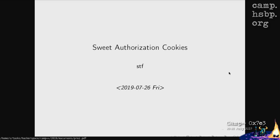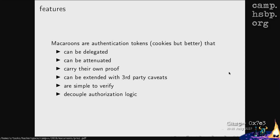Macaroons are basically a cookie on steroids. They provide you with an authorization token which can be delegated, so you can give your token away with attenuated rights. The classical example is a file server where you have authorization to do anything with files under a certain mount point because you are the owner — you can store, read, delete files, make directories, etc. You get a macaroon from this file service that trusts you with all these rights.